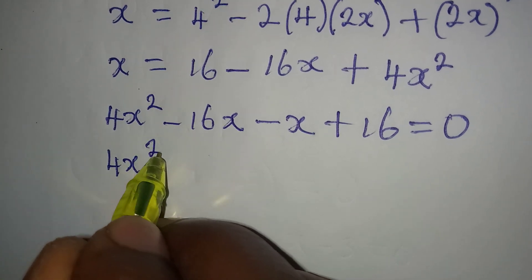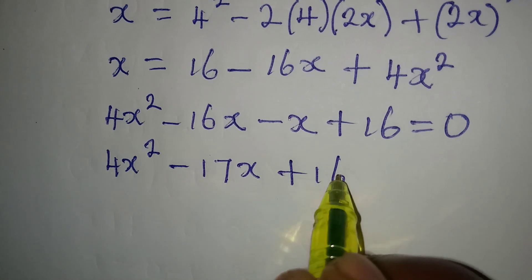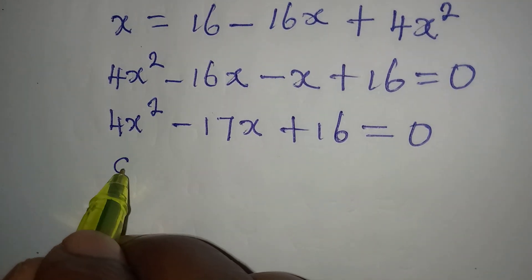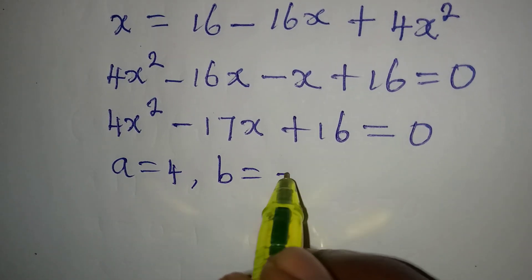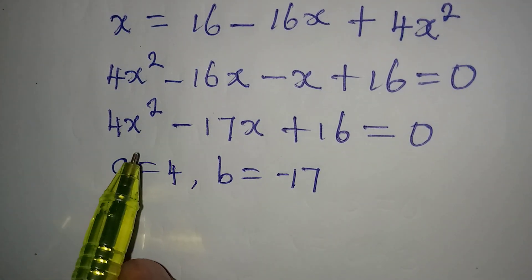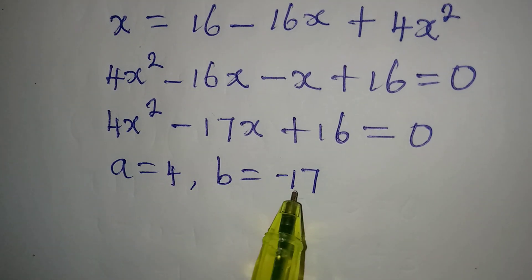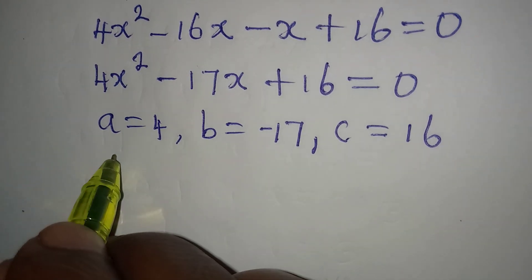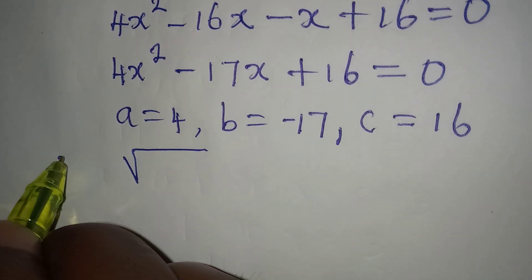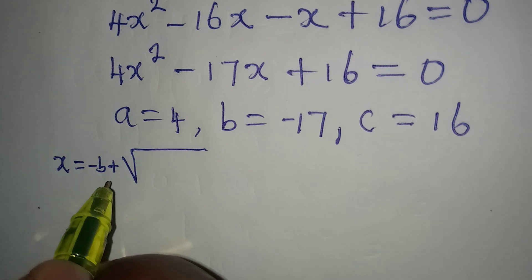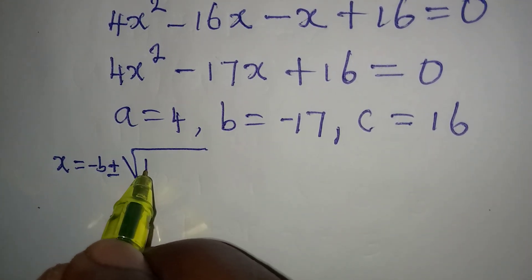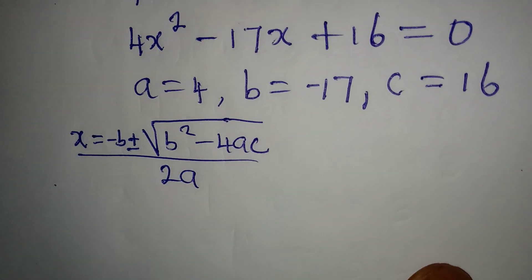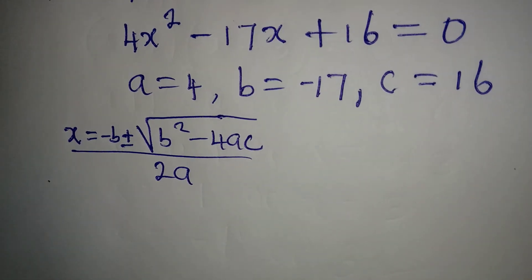So we have 4x squared minus 17x plus 16 equals 0. We will now solve this using the quadratic formula method. Our a is 4, our b is minus 17 — some learners will leave out the negative, but the coefficient of x is minus 17 so you must write the negative — and c is 16. The formula is x equals minus b plus or minus square root of b squared minus 4ac, all over 2a. This is what we call the quadratic general formula.